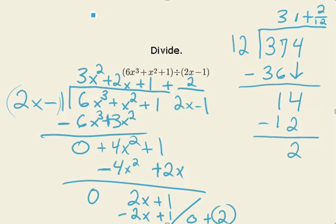So our final answer is this 3x-squared plus 2x plus 1 plus those leftover bits, 2 over 2x minus 1.